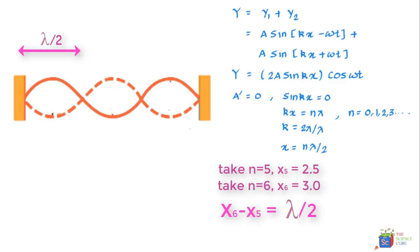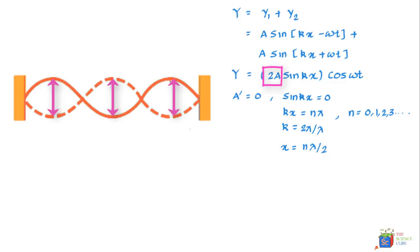And the amplitude will be 2A which is a maximum amplitude possible. That is what we're saying is A dash would have a maximum amplitude which is 2A when sin kx is equal to 1. And for this to happen kx should equal pi by 2 or 3 pi by 2 or 5 pi by 2 and so on.